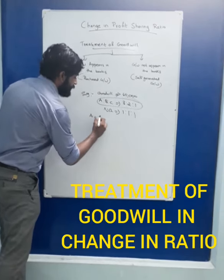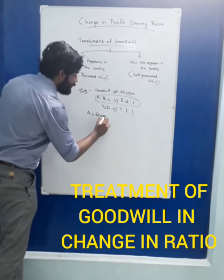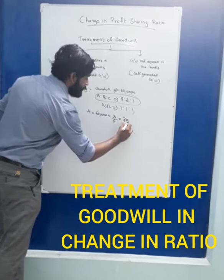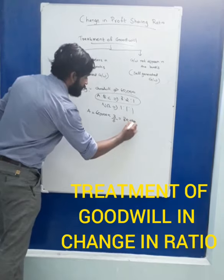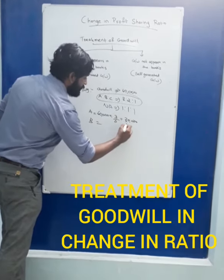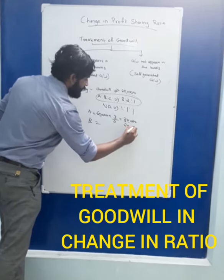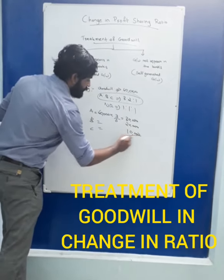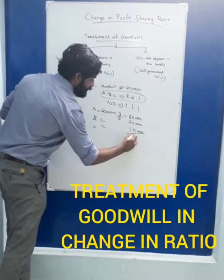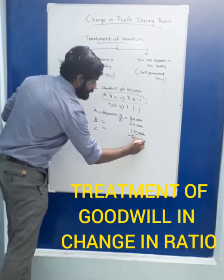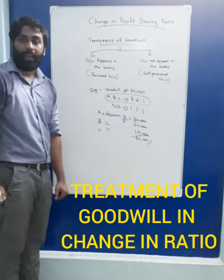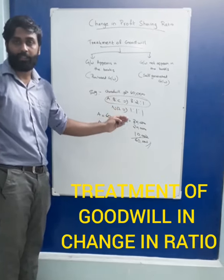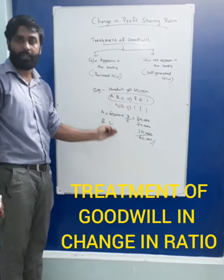A will get 60,000 × 3/6 = 30,000. B will get 20,000 and C will get 10,000. The total 60,000 is shared between A, B, and C in the ratio 3:2:1, giving 30,000, 20,000, and 10,000 respectively.